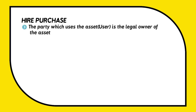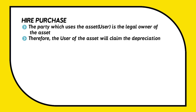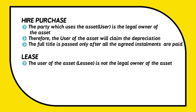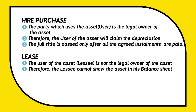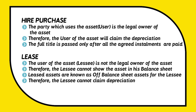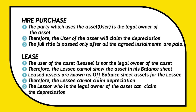A lease and a hire purchase transaction are almost similar to each other. However, there is a small difference between these two with respect to the legal structure. In a hire purchase transaction, the party which uses the asset is the legal owner of the asset, so the user of the asset will claim the depreciation. However, the full title is passed only after all the agreed installments are paid. In a lease transaction, the lessee is not the legal owner of the asset and therefore cannot show the asset in his balance sheet. Such leased assets are known as off-balance sheet assets for the lessee, and therefore he cannot claim depreciation. Whereas the lessor, who is the legal owner of the asset, can claim the depreciation.